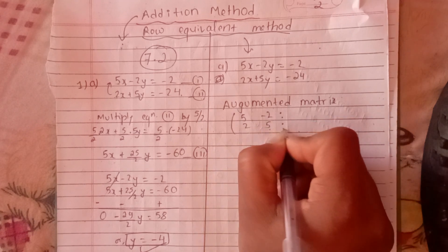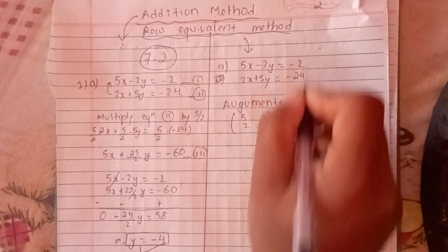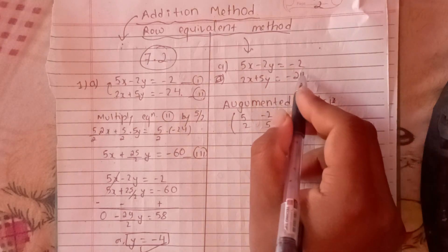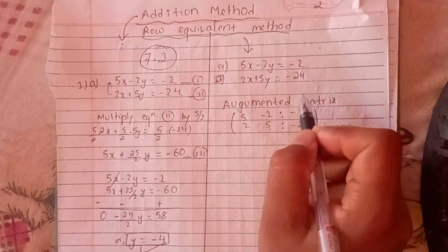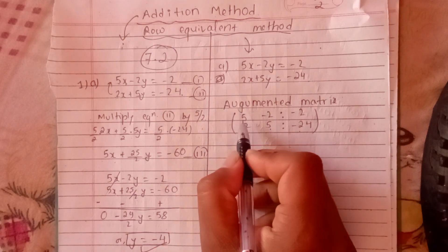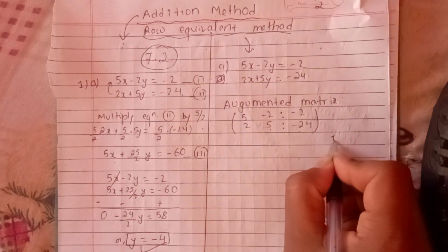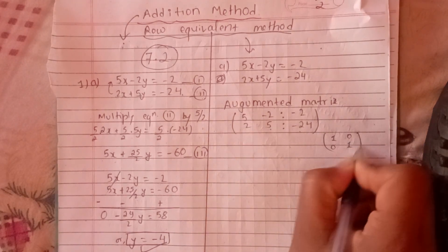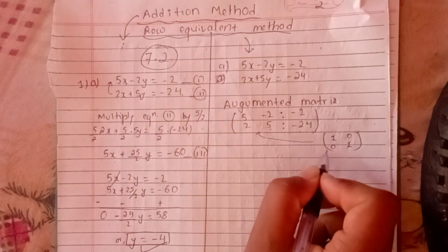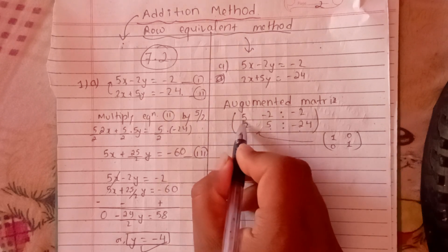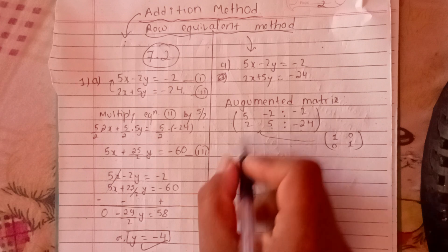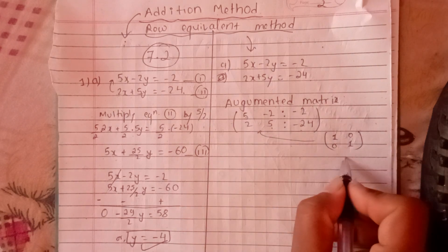Now we draw the augmented matrix. On the right side we write the right-hand values: minus 2 and minus 24. On the left side we write the coefficients. We make a matrix M. The identity part L is 1, 0, 0, 1. We put a 5 with the right side. We want to make the leading entry 1.